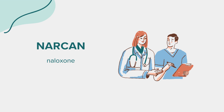Narcan is generally safe and effective, but it must be used promptly in an overdose situation. It can cause withdrawal symptoms in individuals dependent on opioids, including nausea, vomiting, sweating, agitation, and rapid heart rate. These symptoms, while uncomfortable, are not life-threatening. Narcan should not be seen as a substitute for emergency medical care, and medical assistance should always be sought after its administration.